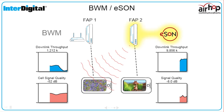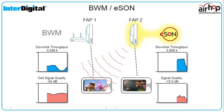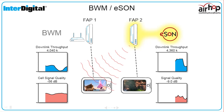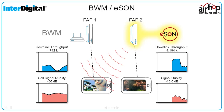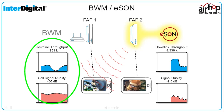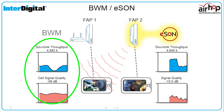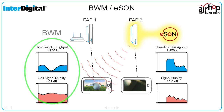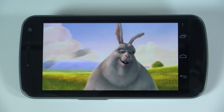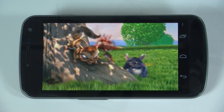eSAN is enabled on FAP2, reducing the interference experienced at UE1. Throughput and signal quality improve at UE1, allowing the video to resume playing.